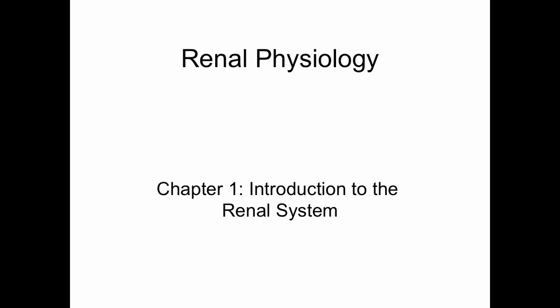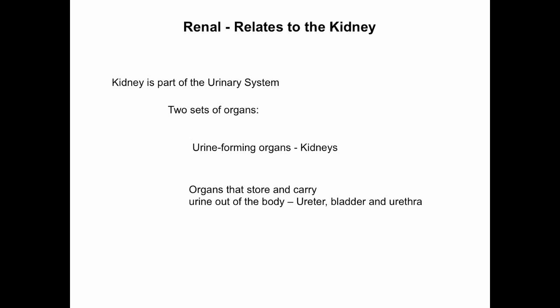We're first going to talk about some basic features of the renal system. We'll talk a little bit about the anatomy, the function of the kidneys, the primary role of the kidneys as a filtering organ and producing urine, and just sort of an overview of urine production.